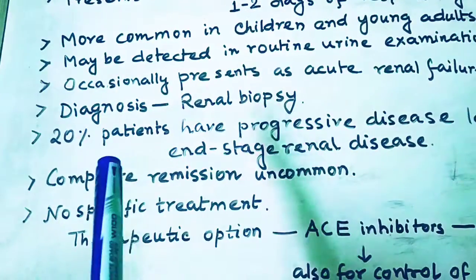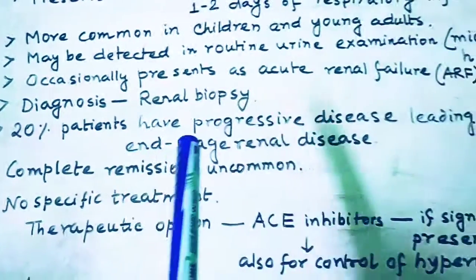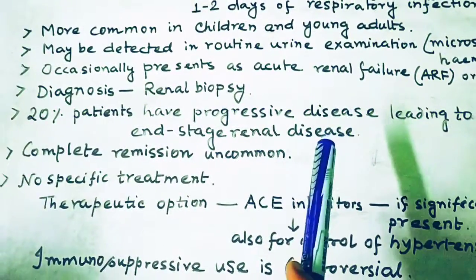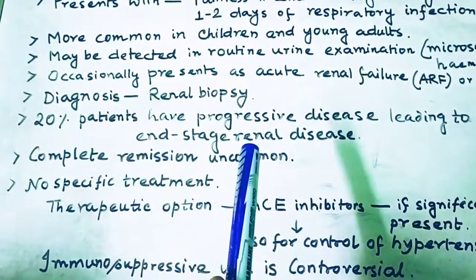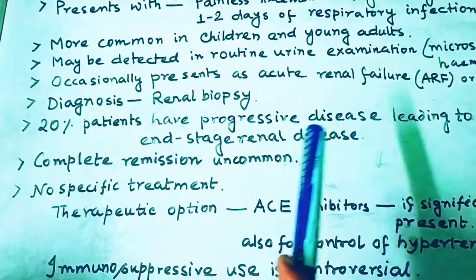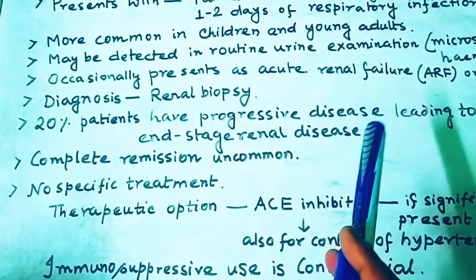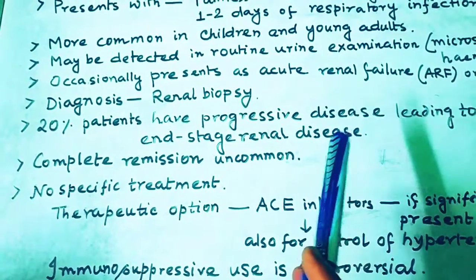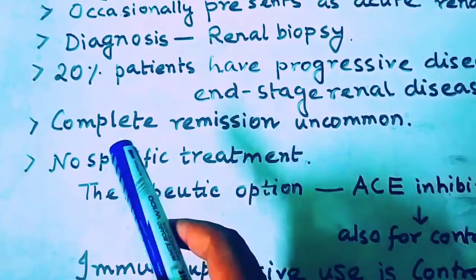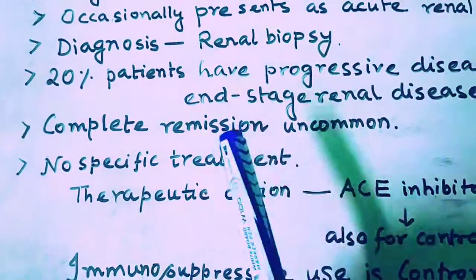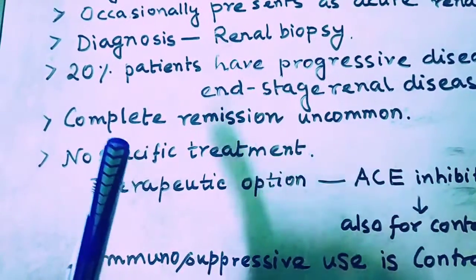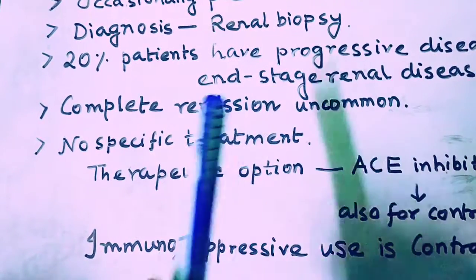About 20% of patients have progressive disease, which can lead to end-stage renal disease. Complete remission is not common in this condition.